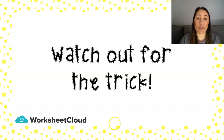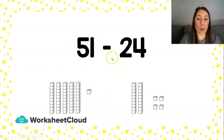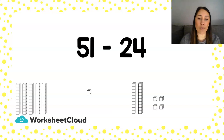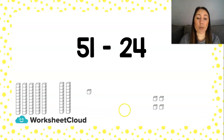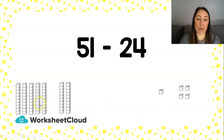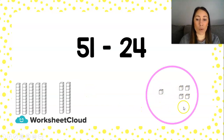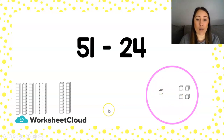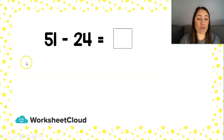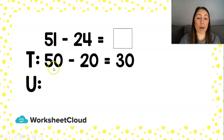But now I need to watch out for a trick, because 51 minus 24 might look the same as the last sum, but we need to be careful. I'm going to group my 10s — the 50 and the 20 — and I'm going to group my units — the 1 and the 4. Now I already see a problem because 50 minus 20 I can do, but 1 minus 4 is where my problem is.